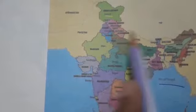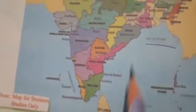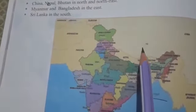China, Bhutan, and Nepal are on the North and East side. Myanmar and Bangladesh are on the East side. Sri Lanka is on the South side. Pakistan and Afghanistan — North and West; China, Nepal, Bhutan — North and East; Myanmar and Bangladesh — East; Sri Lanka — South.